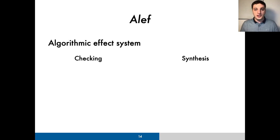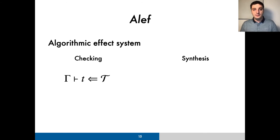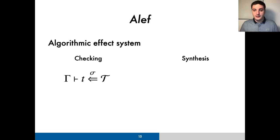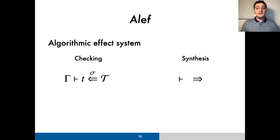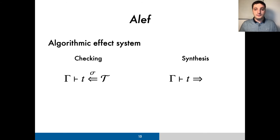Let's look at both judgments. First, the checking judgment takes as input the typing context gamma, a term and a type T, and if possible, it generates as output the effect variable instantiation sigma needed to assert that this term checks the type T instantiated with sigma in context gamma instantiated with sigma. Similarly, for synthesis, we only take as input the typing context and the term, and generate as output, if possible, a type for this term and the instantiations sigma needed for this synthesis.